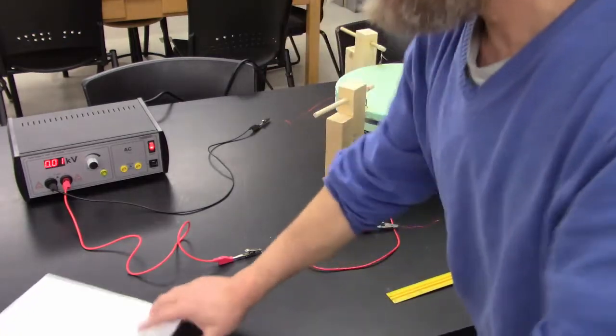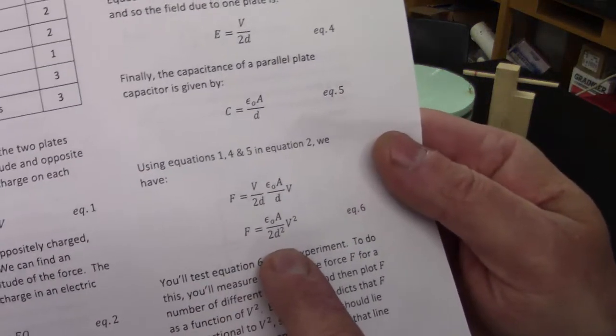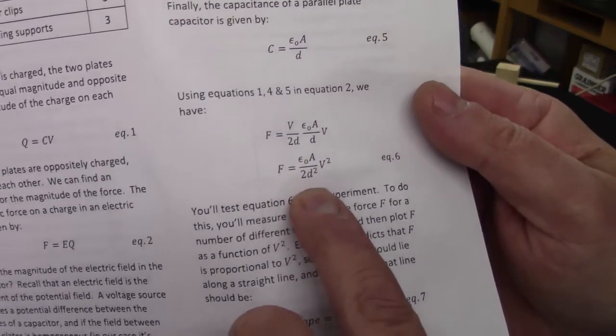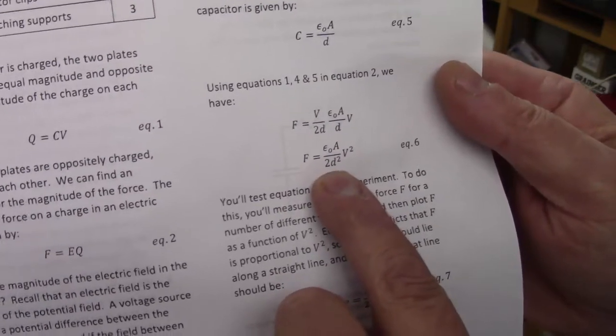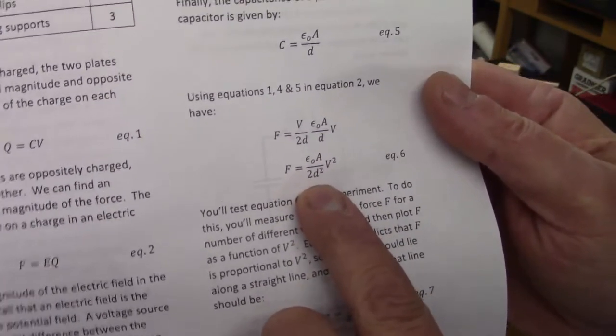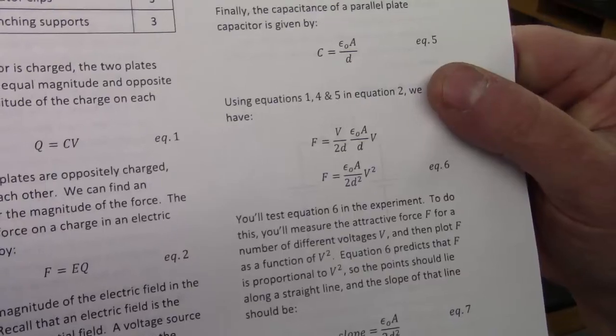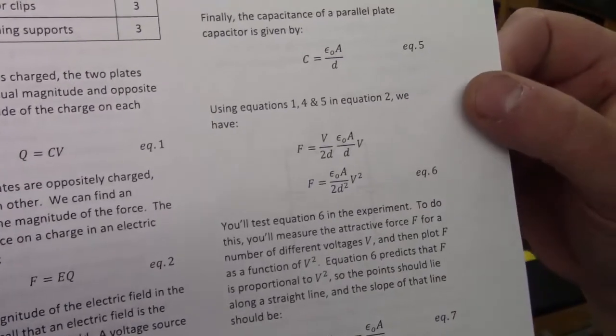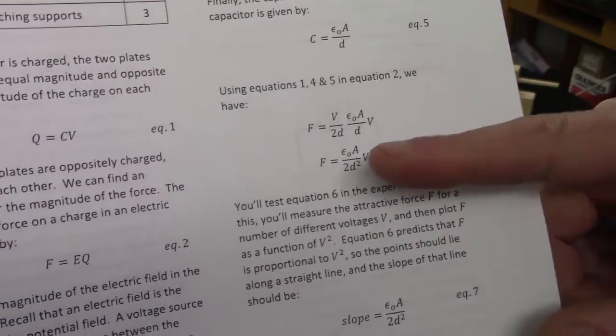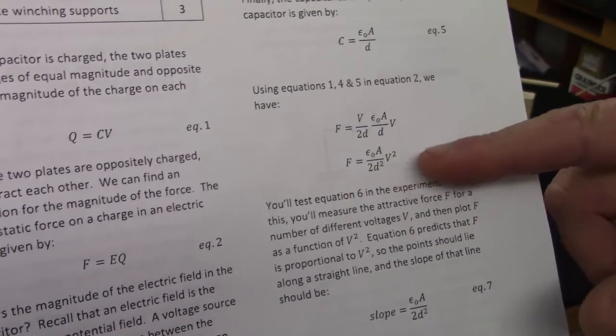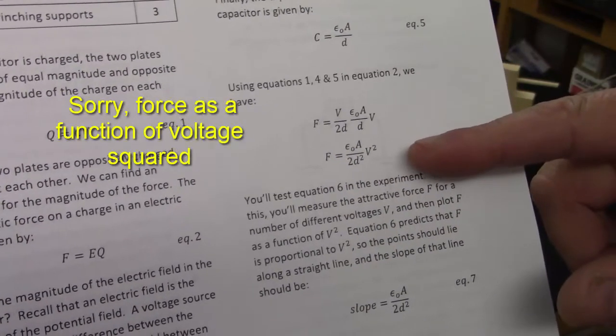So what we're going to do is test this equation. This is the first page of the write-up, and this equation is derived on here. This should be the force—it's proportional to the square of the voltage. What we're actually going to do is measure the forces for a bunch of different voltages, square the voltage, and plot force as a function of voltage squared. According to this equation, that should make a straight line plot.